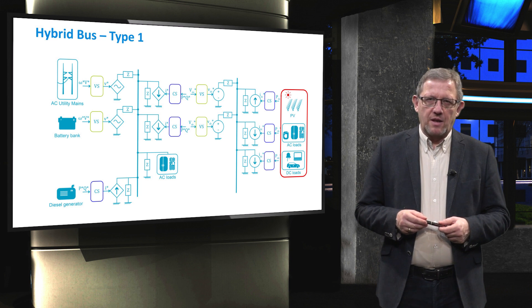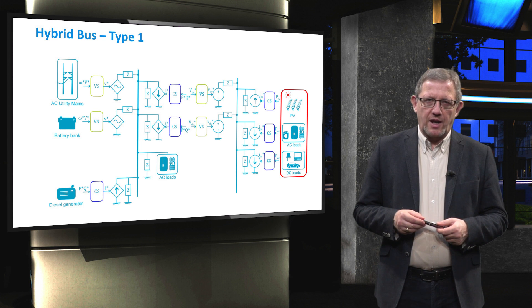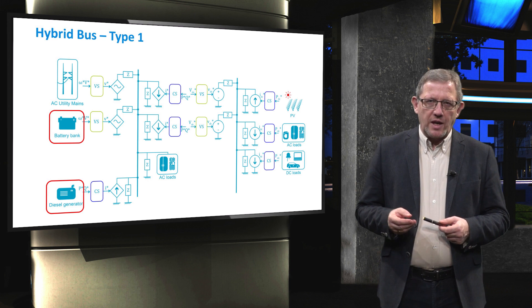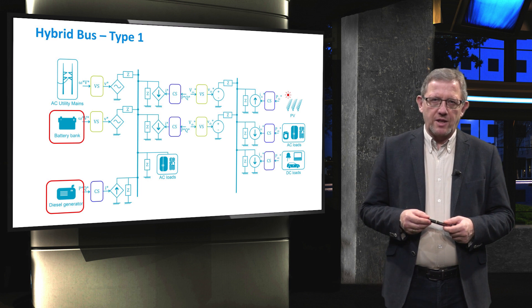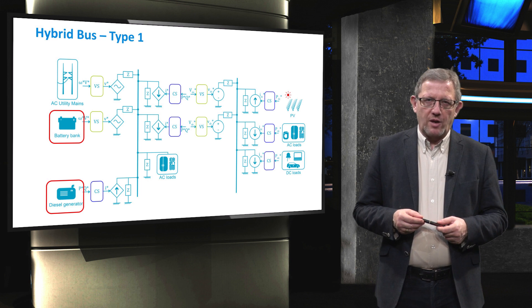At the AC bus, if strong, the grid is typically the best choice to control the AC link voltage. However, if the grid is weak, then the battery bank or diesel generator can be used to regulate the AC voltage.